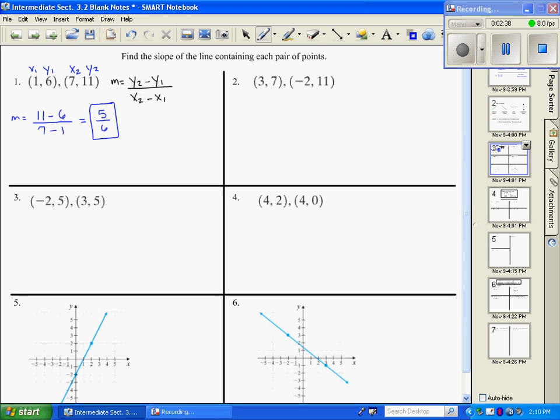Number two, the same thing. If I label these, now I'm going to use y2. My slope is going to be y2 minus y1 over x2 minus x1. 11 minus 7 is 4 over negative 5.